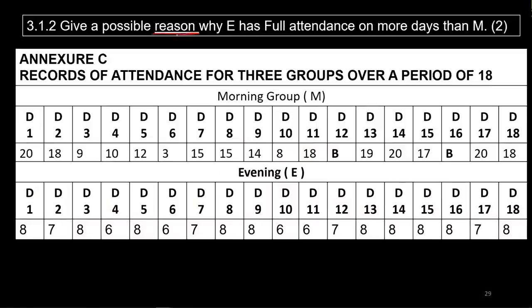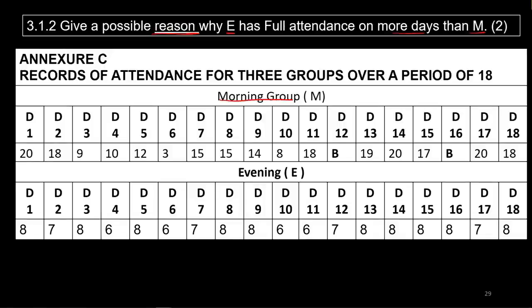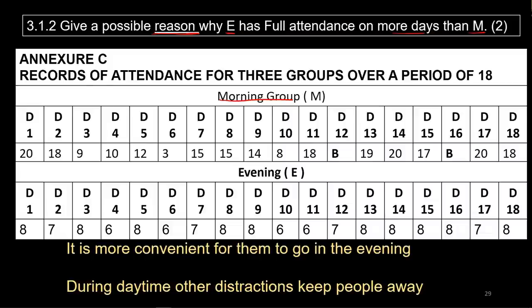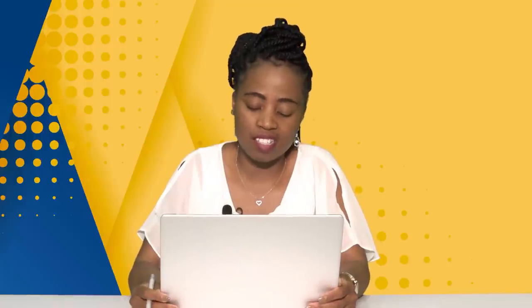Now we are reasoning at level four. The question asks: give a possible reason why group E has full attendance on more days than group M. Your answers will differ, but you need to be logical. In the morning, people usually go to work; in the evening people are more relaxed. So convenience — it's more convenient to attend in the evenings, and there are more distractions in the morning that might prevent people from attending.